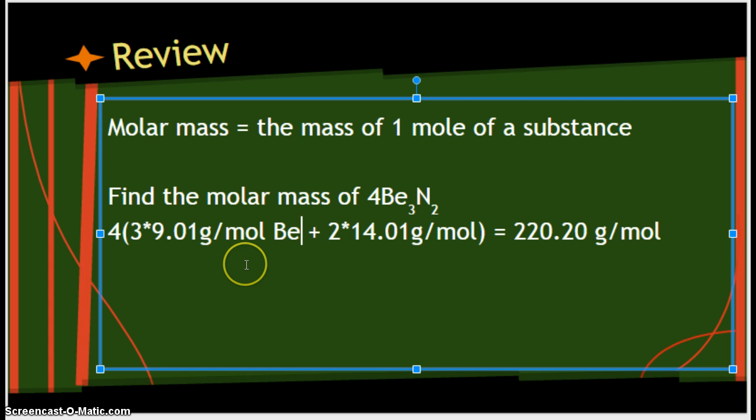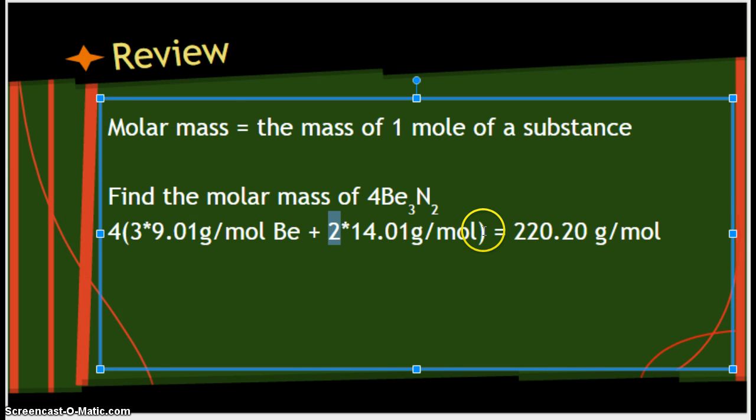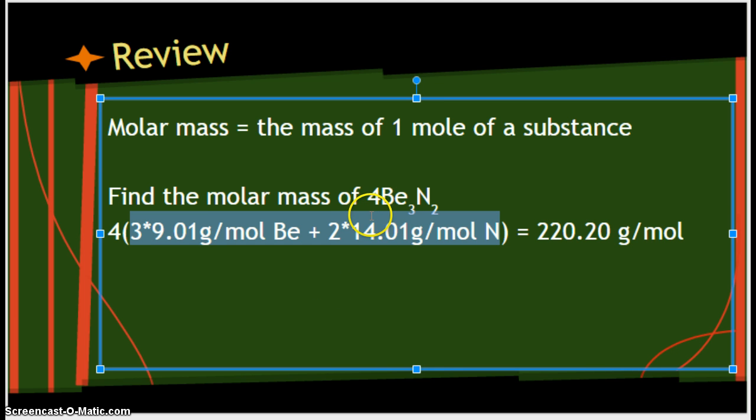So 9.01 grams per mole of Be. And how many atoms of Be are there in each molecule? There are three. So three times 9.01 grams per mole of beryllium, plus now we have to add in our nitrogen. And how many atoms of nitrogen are there? Two. And each nitrogen from the periodic table is 14.01. We round to hundredths. And there's two of them. So we put that all in our calculator, and don't forget that we multiplied this whole answer by 4 because it has a coefficient of 4, which means there's 4 copies of it. And our answer is 220.20 grams per mole.